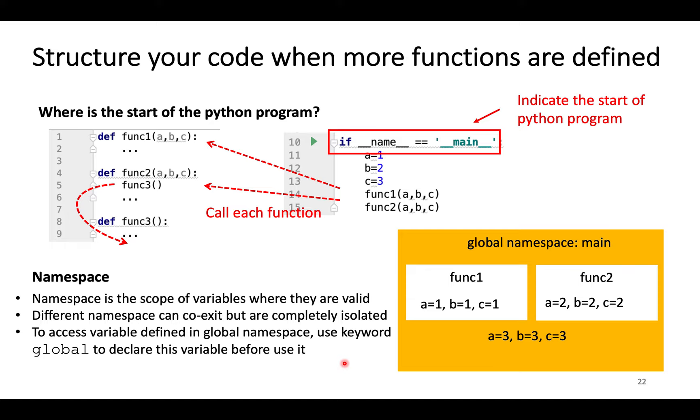With more functions defined, the code will become long and messy. We need to organize them in a way to keep code clean and effective, such as which functions should be called by which functions, how does the data flow through the whole program. As we learned earlier, a code line like this one indicates the start of program execution. This code block is called the main program. In this case, the main program calls function 1 and function 2, and function 2 further calls function 3.